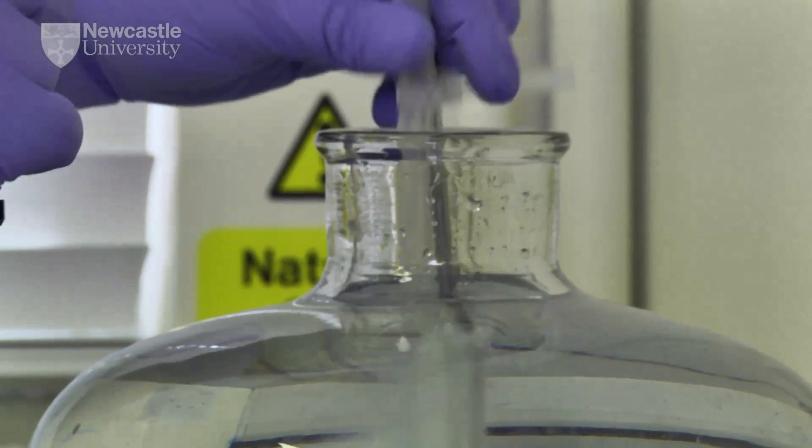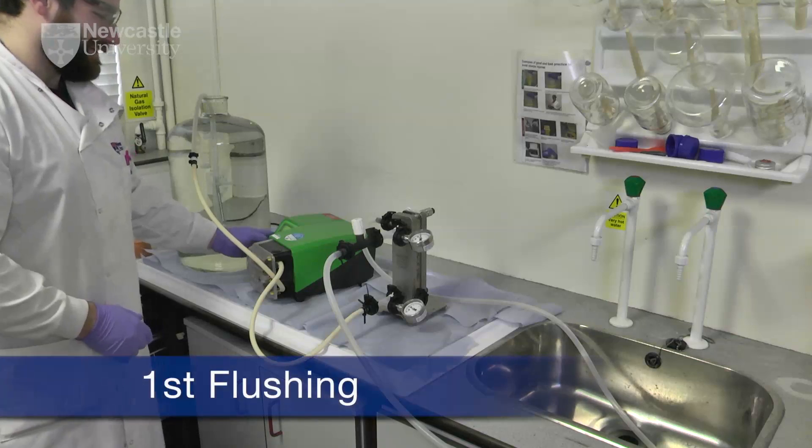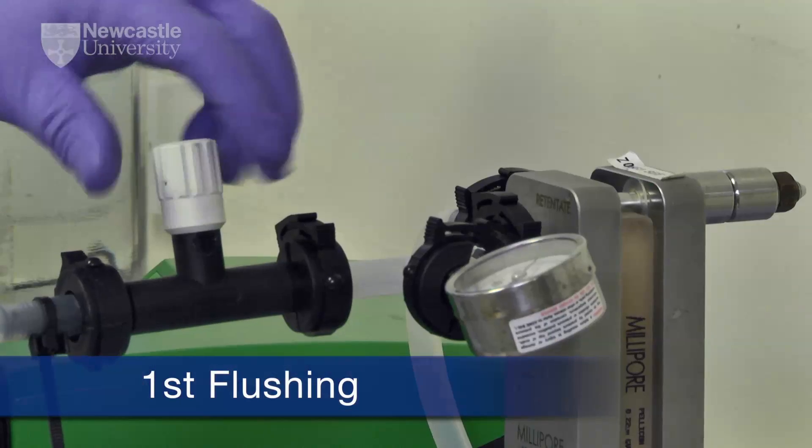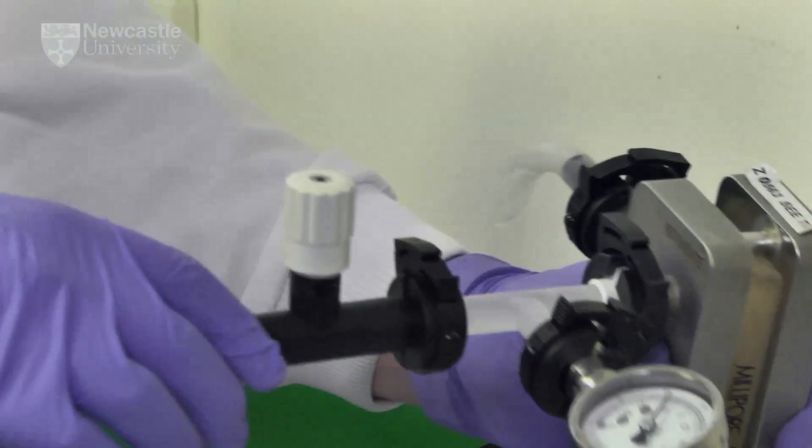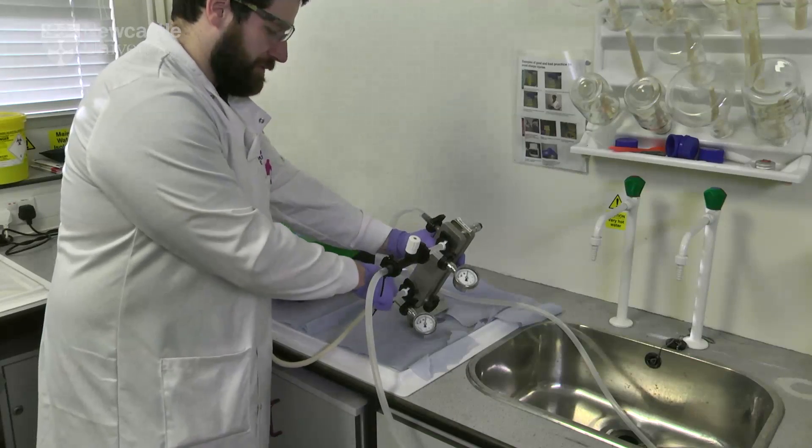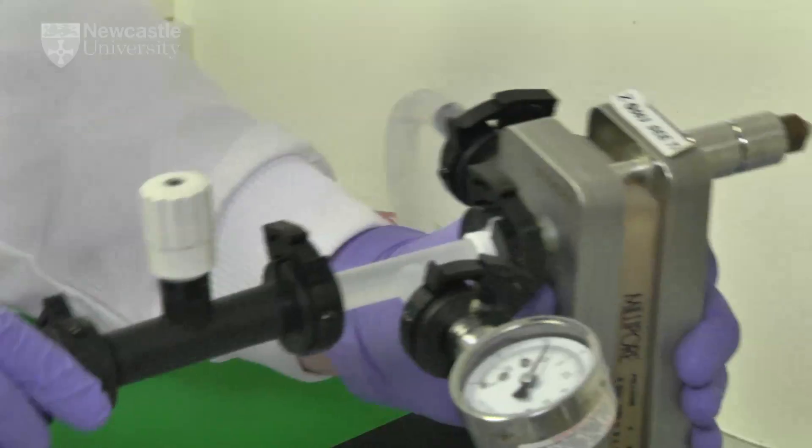Having installed the filtration cassette, the system is flushed with deionised water or similar. Flush water must be pure to avoid fouling the cassettes. Air bubbles can be removed by manipulating the manifold and connected tubing.